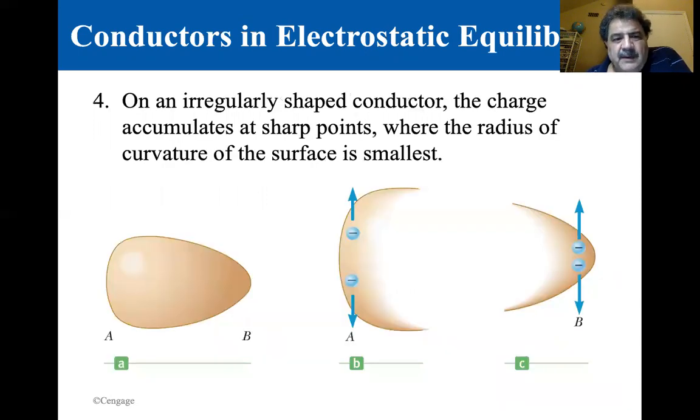Number four is on an irregularly shaped conductor, the charge accumulates at sharp points where the radius of curvature of the surface is smallest. If you look at the charges being repelled from one another, they're going to dissipate here. If you think of breaking this into components, the component along the sharp point isn't as great.